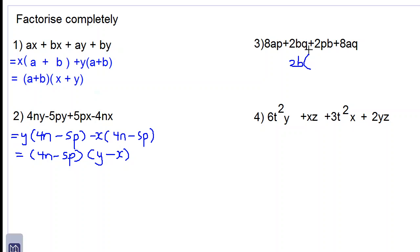So we have 2b into 2bq will leave q remaining, plus 2b into 2pb will leave p remaining, and then we have 8ap over here, plus 2b plus 8aq. So let's put the 8ap and the 8aq together.